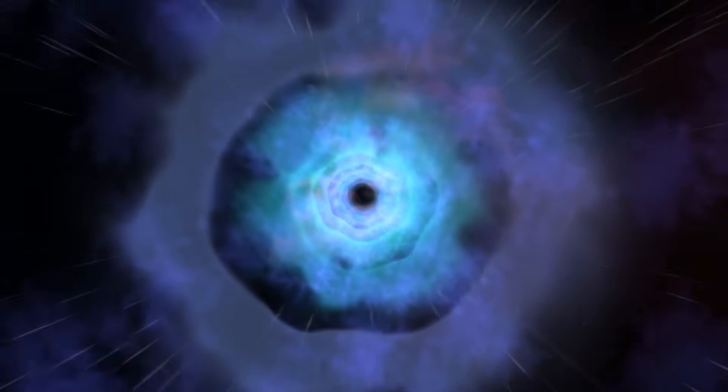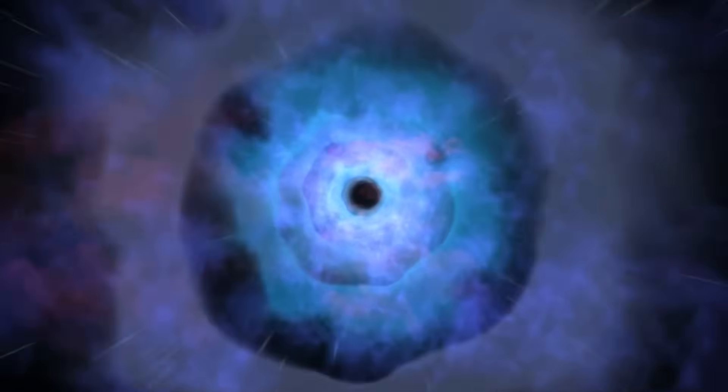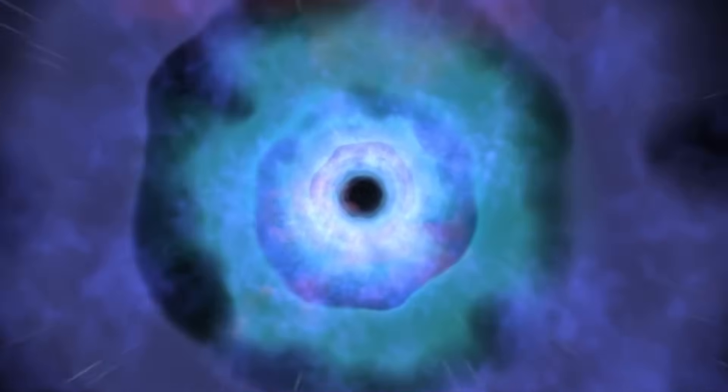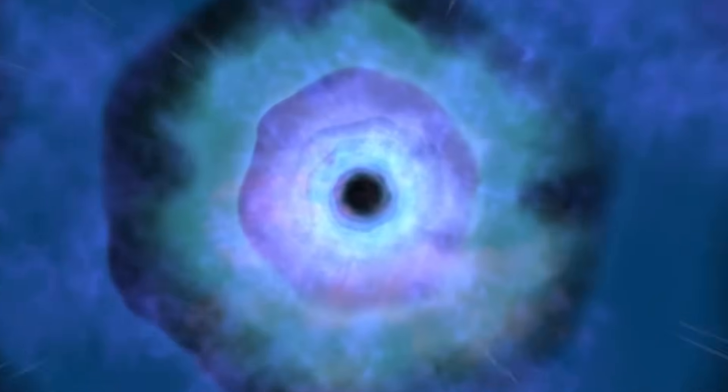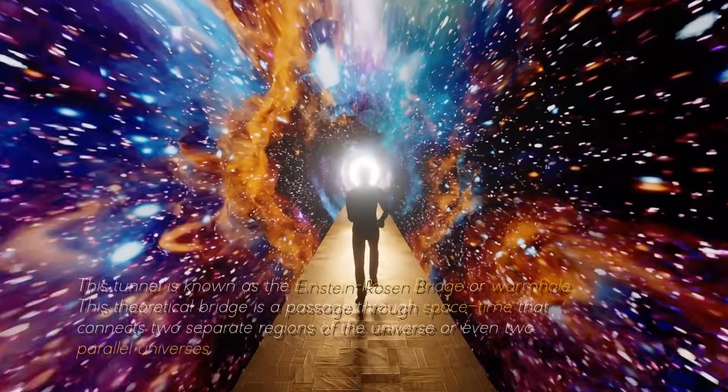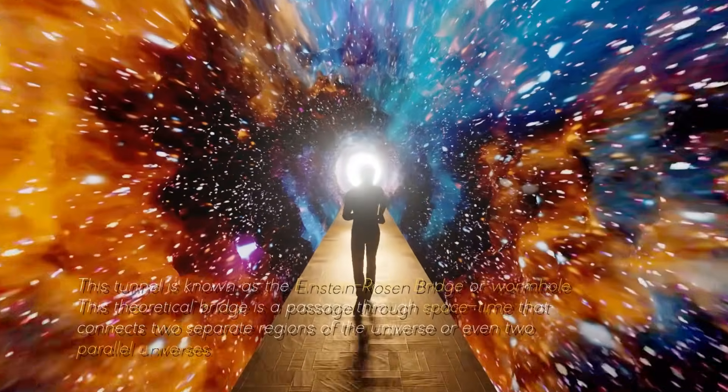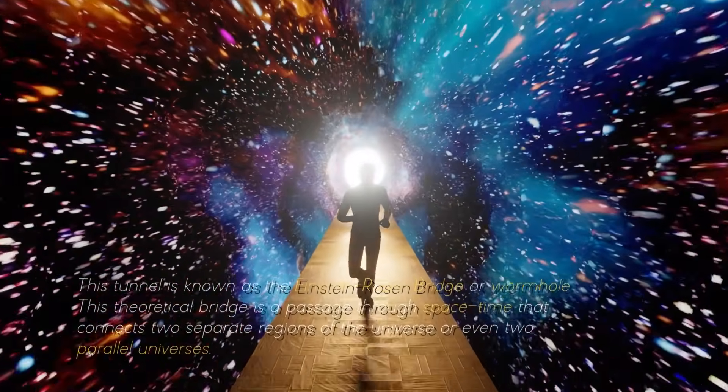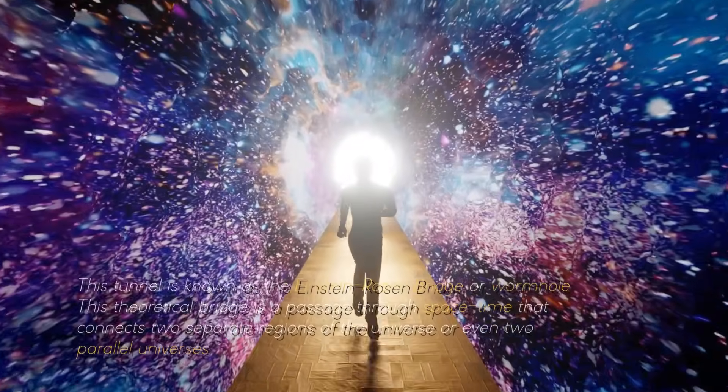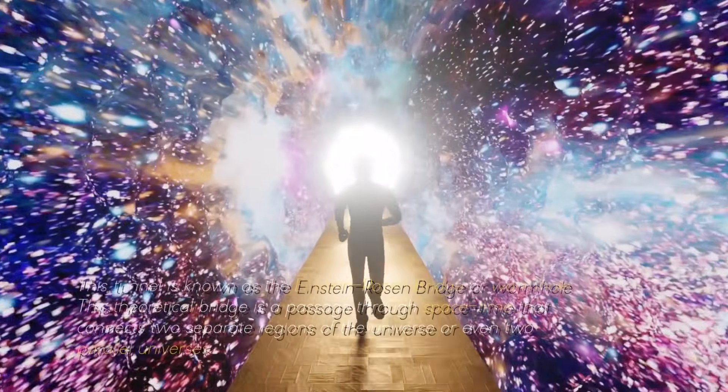You are probably wondering what lies beyond the third layer called the Singularity, right? The idea is that, instead of being crushed by falling into a black hole, one would be sucked through a tunnel through the ring of fire and emerged through a white hole somewhere else in a parallel universe. This tunnel is known as the Einstein-Rosen Bridge, or wormhole. This theoretical bridge is a passage through space-time that connects two separate regions of the universe or even two parallel universes.